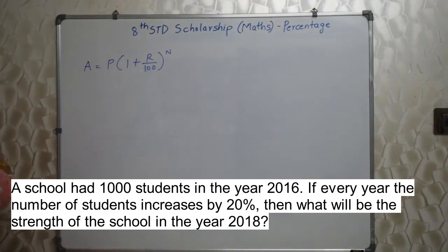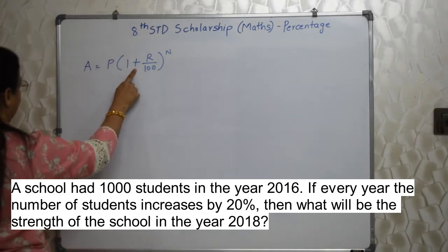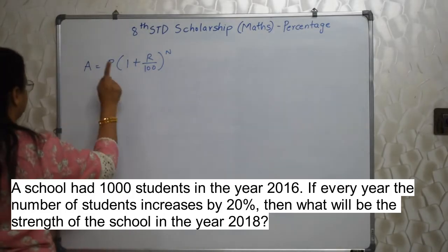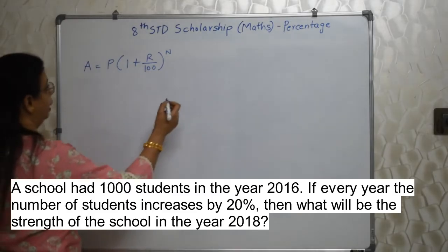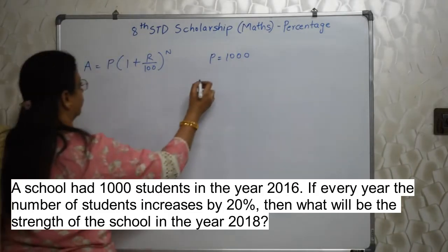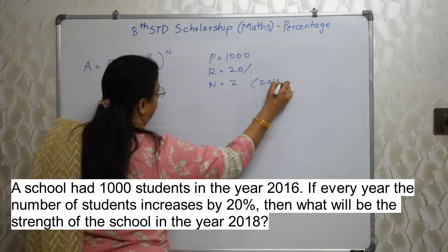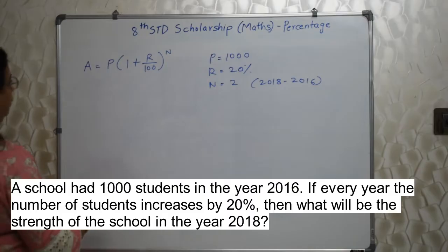If the number of students increases every year, then it will be plus. If it decreases, then it will be minus. Otherwise the formula is the same. Be very careful — if it decreases, then it is minus. They have given us 1000 students in 2016 and we need to find 2018. So P is 1000, R is 20%, and N is 2 years — that is 2018 minus 2016.